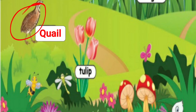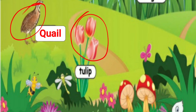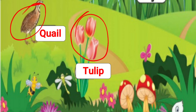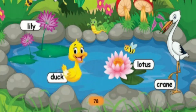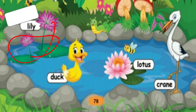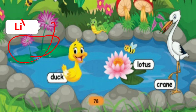Quail. And what is this? This is a tulip. T-U-L-I-P. Tulip. What is this? This is a lily. L-I-L-Y. Lily.